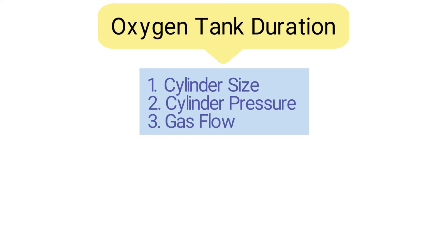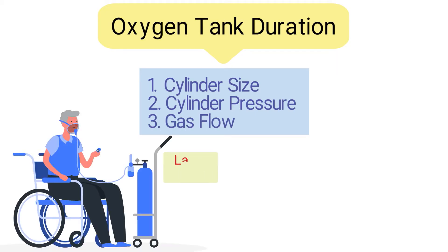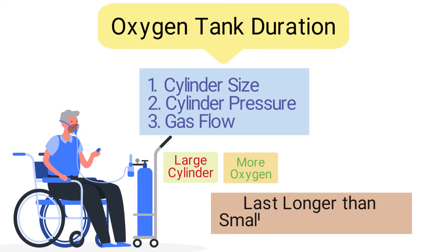In order to calculate the duration of an oxygen tank, you must know the cylinder size, cylinder pressure, and the gas flow. In general, the larger the cylinder is in size, the more oxygen it will hold, which means that it will last longer than smaller-sized cylinders.